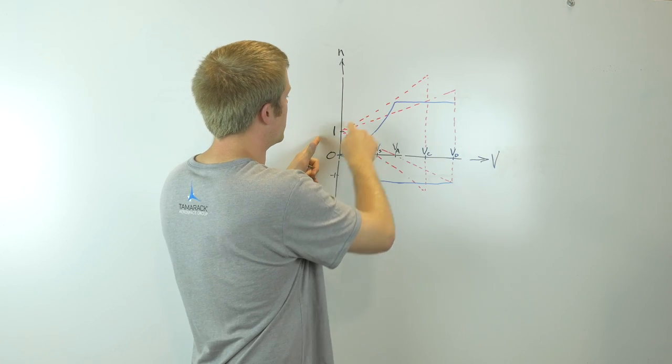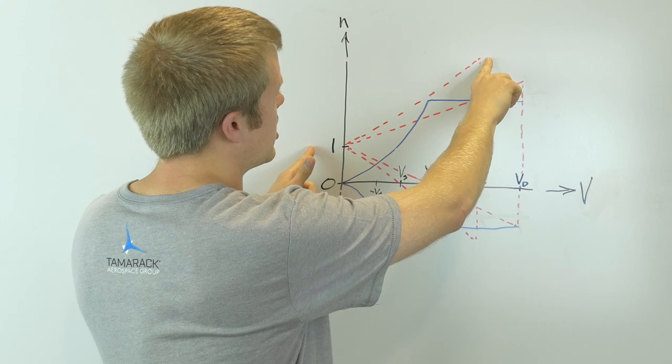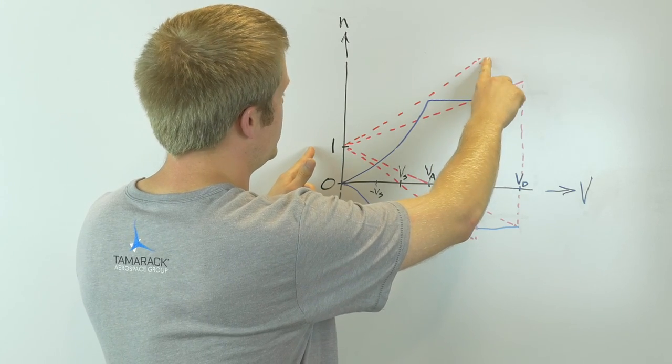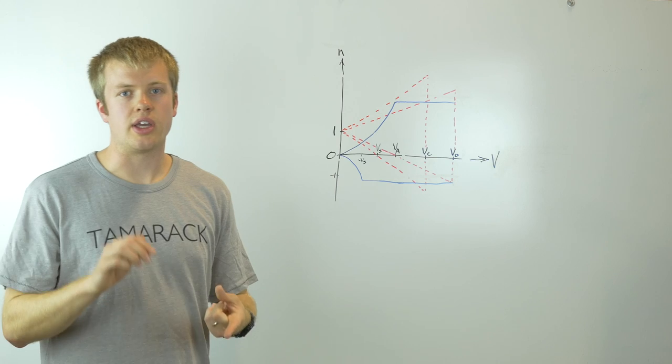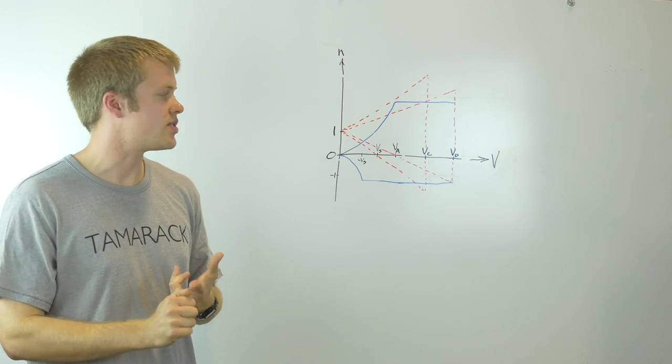For the gust envelope, the red lines, a line is drawn from 1 G up to the maximum gust load factors at VC and VD, which are determined either by empirical equations or by dynamic gust analysis.